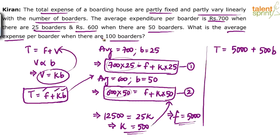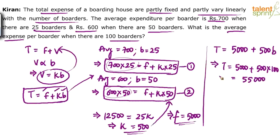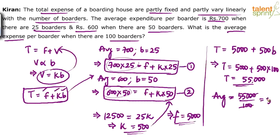The question asks for the average when there are 100 borders. Total = 5,000 + 500 × 100 = 5,000 + 50,000 = 55,000. So the total expenditure is 55,000 when there are 100 borders. Average = 55,000 ÷ 100 = 550. Average expenditure per border is Rs. 550 when there are 100 borders. This is how you solve such questions.